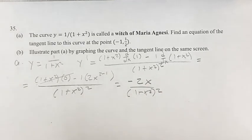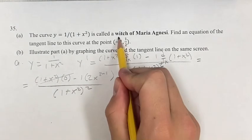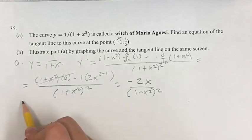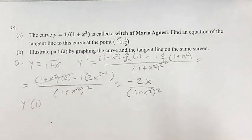This we can simplify by distributing out the denominator, or we can just plug in x equals negative 1, since we're actually looking for the slope. We're looking for the derivative when x equals negative 1.